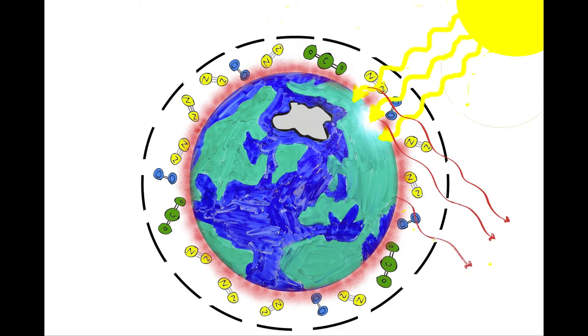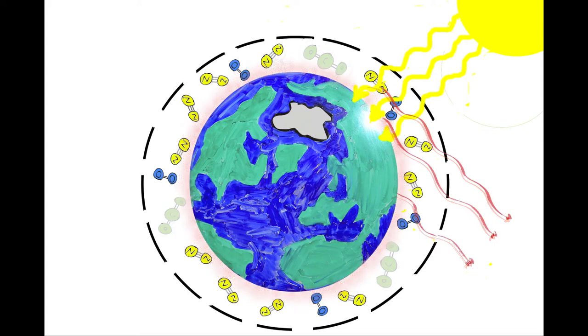To cool off, the Earth releases a different form of energy known as infrared radiation. With just nitrogen and oxygen in the atmosphere, all this energy would escape back to space, and the Earth's surface would be much colder.